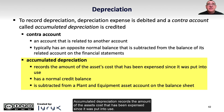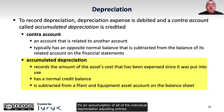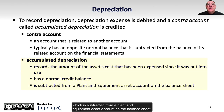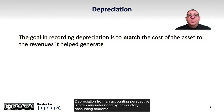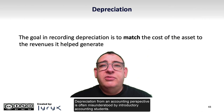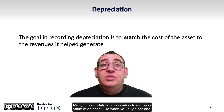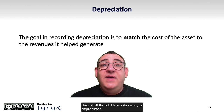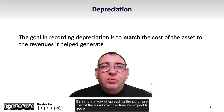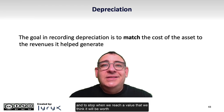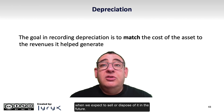Accumulated depreciation records the amount of the asset's cost that has been expensed since it was put into use — an accumulation of all individual depreciation adjusting entries — with a normal credit balance subtracted from the plant and equipment asset on the balance sheet. The goal is to match the cost of the asset to the revenues it helps generate. Accounting depreciation is often misunderstood: it's not about a drop in market value, but simply a way of spreading the purchase cost over the time we expect to use the asset, stopping at its estimated residual value.